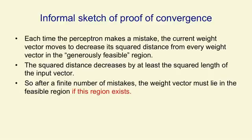And that's it. That's our informal sketch of a proof that the perceptron convergence procedure works. But notice, it all depends on the assumption that there is a generously feasible weight vector. And if there is no such vector, the whole proof falls apart.